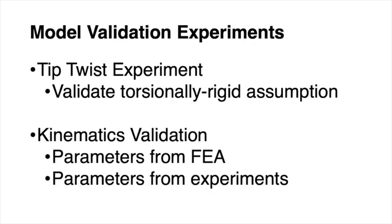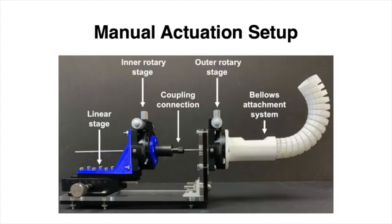We perform two validation experiments to validate our model and assumptions. In the first experiment, we validate the torsionally rigid assumption of bellows tubes. And in the second experiment, we validate our derived kinematic model. We constructed a manual actuation system that enables rotation and translation of two concentric helical bellows. The setup uses two rotary stages which allow independent rotation of each bellows. Because helical bellows require simultaneous rotation and translation with a specific pitch, a dovetail linear stage actuator was used to allow relative translation as the tube rotated.